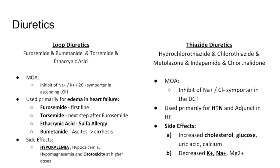We'll start with loop diuretics — extremely important, you'll see these all the time. Our loop diuretic, as discussed, inhibits the sodium-potassium-chloride symporter in the ascending loop of Henle. Therefore, we're keeping those substances in the nephron.